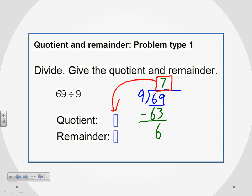And then the remainder is the amount at the end that we were left with. In this case, 6.